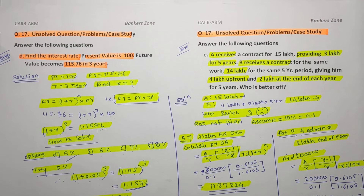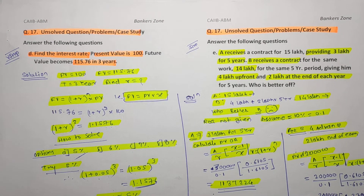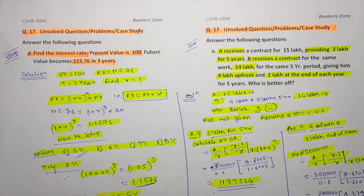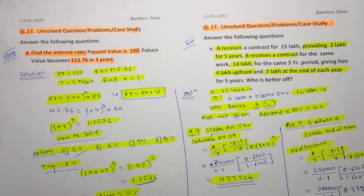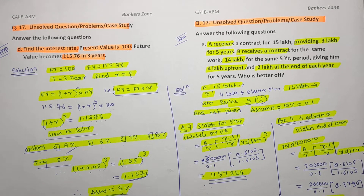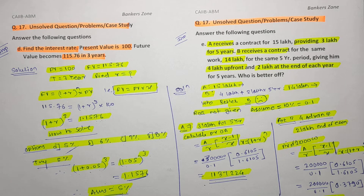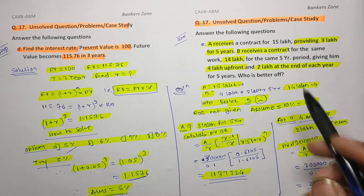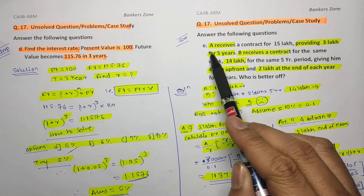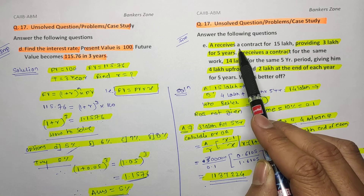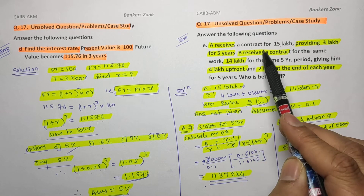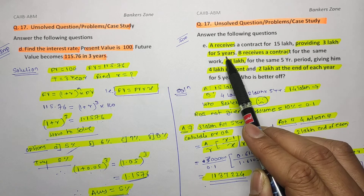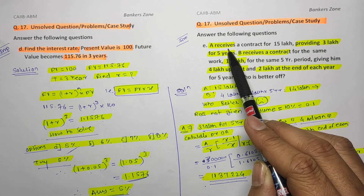Now we will solve the next important case study from the Macmillan book. Person A receives a contract for 15 lakh rupees and pays 3 lakh rupees per year for 5 years — that is, 5 × 3 = total 15 lakh. Person A pays 3 lakh at the end of each year for five years.